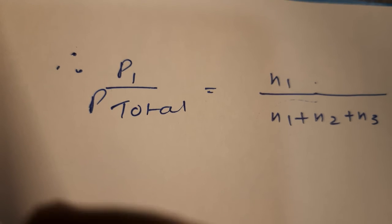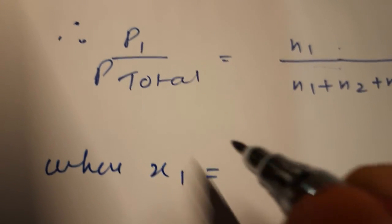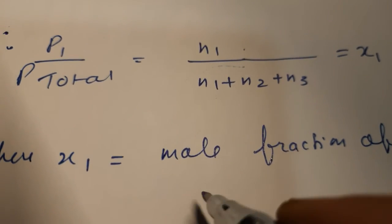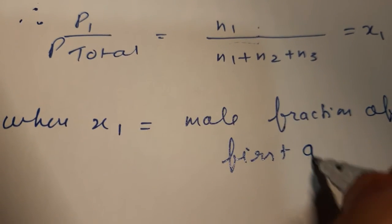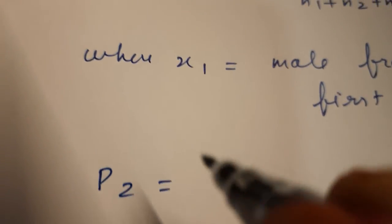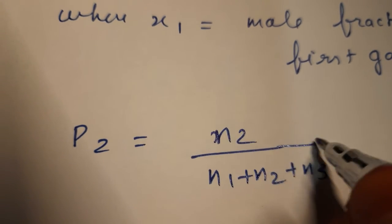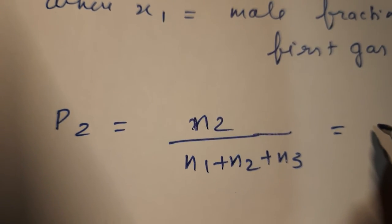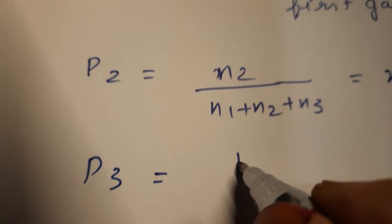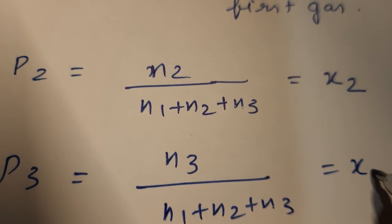Where x1 is the mole fraction of the first gas. Similarly, P2 upon P total equals n2 upon (n1 plus n2 plus n3), which is the mole fraction of the second gas. And P3 upon P total equals n3 upon (n1 plus n2 plus n3), which is the mole fraction of the third gas.